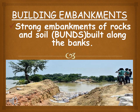Rivers constantly erode the soil on their banks. Strong embankments of rocks and soil, also called high bunds, can be built along the banks to prevent soil erosion. High bunds can also be used to prevent erosion of soil on land by preventing flooding.